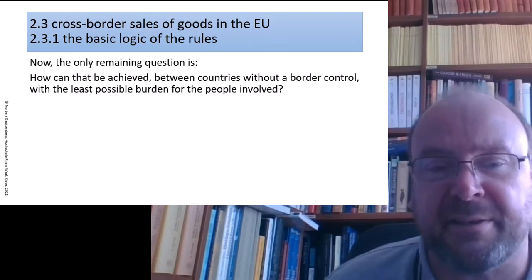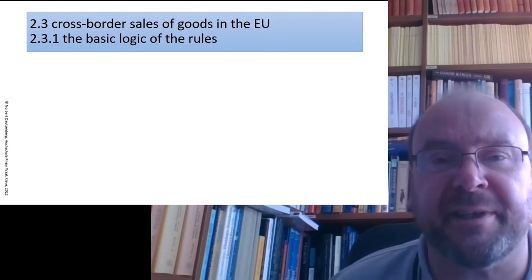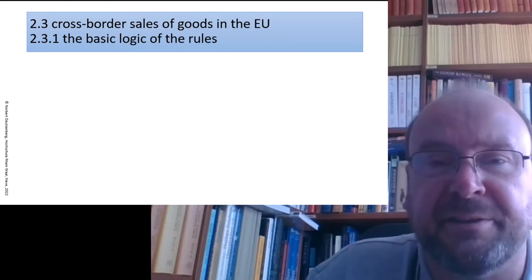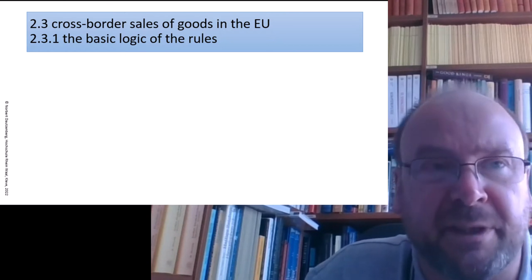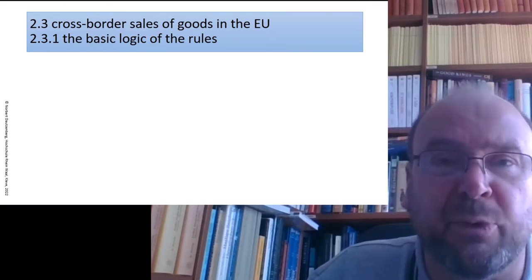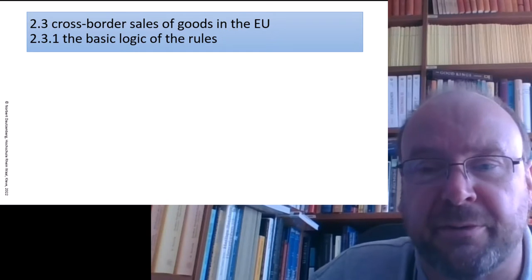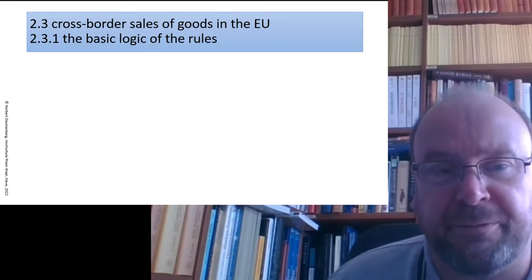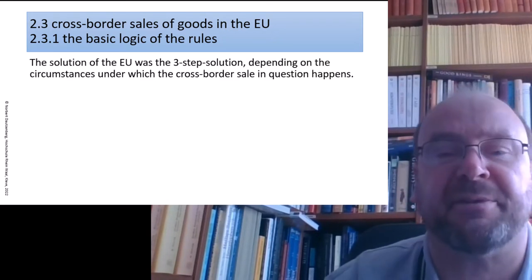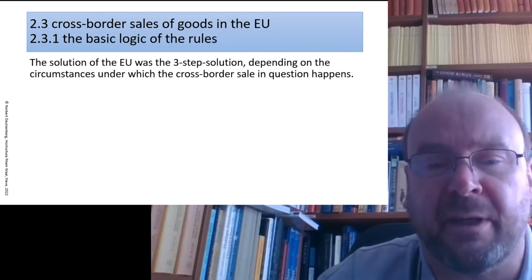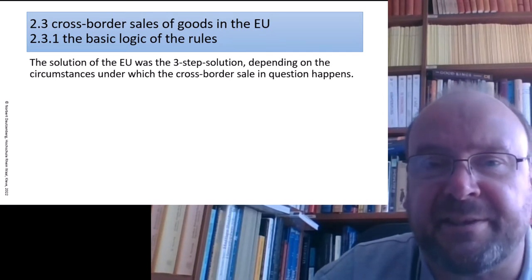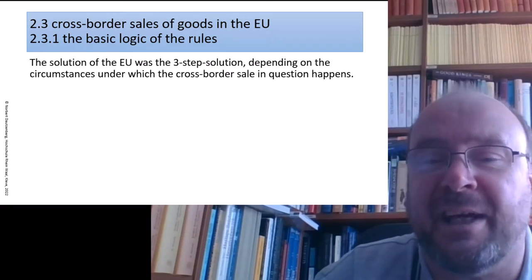That is the basic question which the legislator had to answer already in 1992 or 1993 when they removed the border controls. The EU found a three-step solution, depending on the circumstances under which that cross-border sale of a good happens.